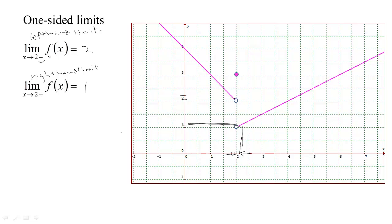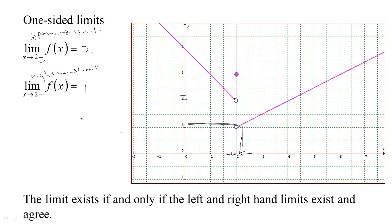From our graph we can see the left-hand limit is 2, whereas the right-hand limit is 1. Remember, in order for the limit to exist, it exists if and only if the left and right-hand limits exist and agree. These don't agree, so for this function the limit as x tends to 2 — without regard to either side — doesn't exist. If no matter how you approach 2 you don't have the same single value emerging, then the limit doesn't exist.